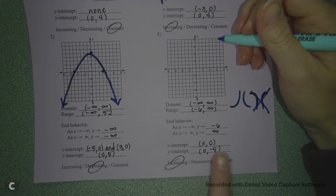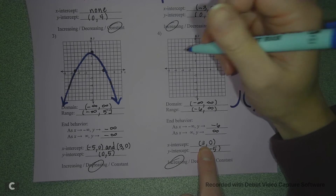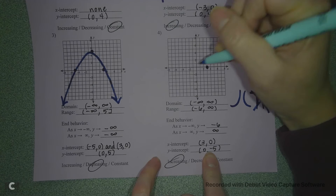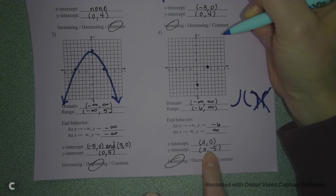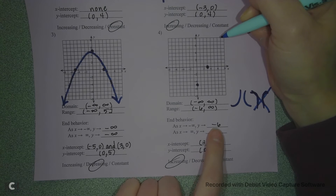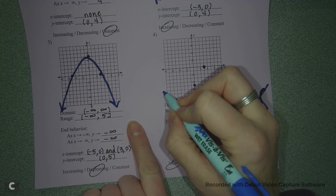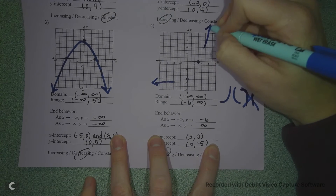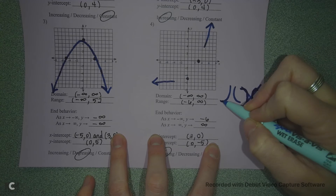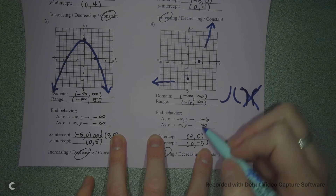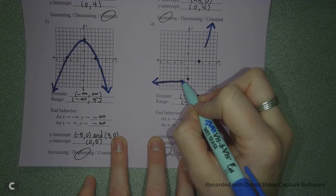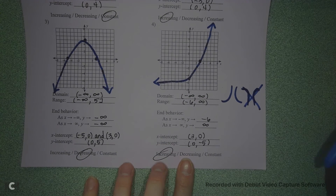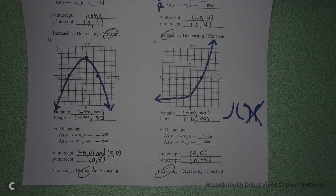We look at our intercepts: we have an intercept at (3, 0), so we put a dot there, and a y-intercept at (0, -5). Then for end behavior, on the left it's going towards negative 6, and on the right it's going positive infinity — going up. So it looks like it's going to be this curve: it approaches 6 as an asymptote, then crosses through the intercepts and curves upward. It's okay if your graph isn't perfect, as long as you are trying.